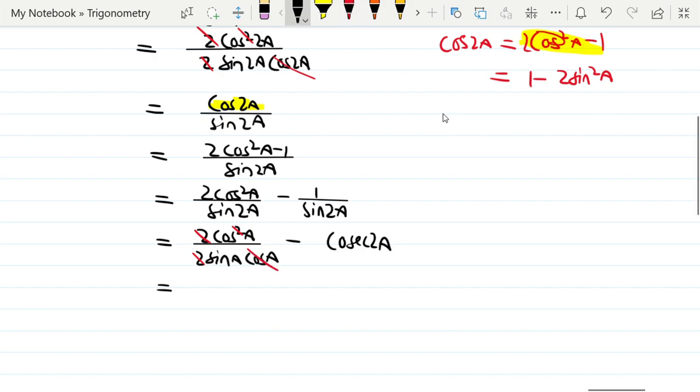CosA by sinA minus cosec2A. So cosA by sinA is cotA minus cosec2A, proving the right side. We've proven it.